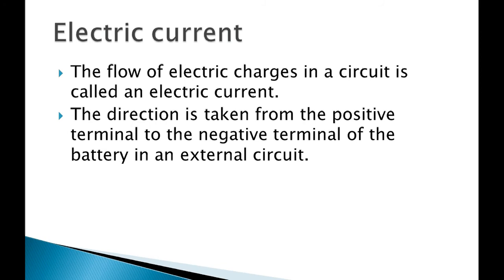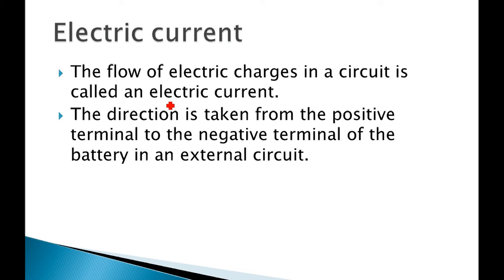Now, when charge is flowing it will produce a current. Basically, the flow of electric charge in a circuit produces an electric current. The flow of electric charges — positive and negative — when they flow, electric current is produced.